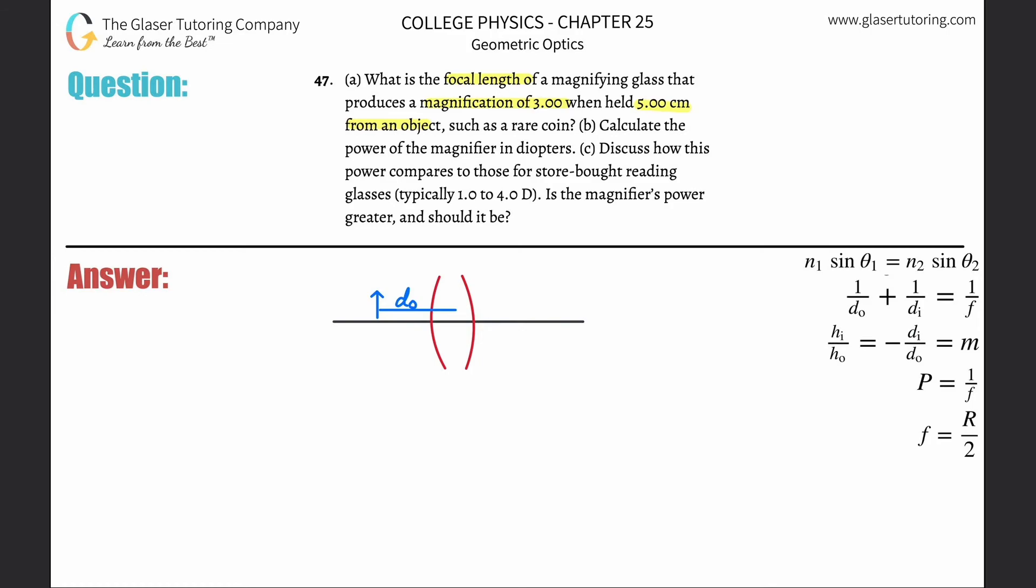So it's negative di over do equals magnification. If I want to find the image distance, I'm going to just cross multiply this, bring the negative sign over, and there you go.